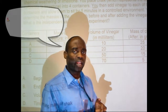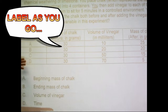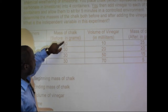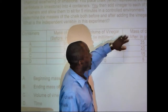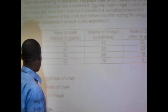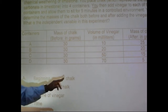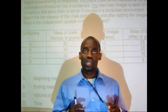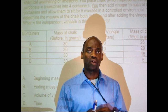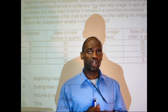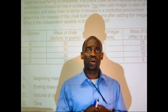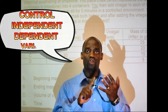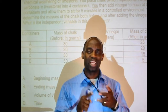Let's zoom in. We have containers A, B, C, D. We have a mass of chalk before in grams, volumes of vinegar, and mass of chalk after. The answer choices are: the beginning mass of the chalk, the ending mass of the chalk, the volume of vinegar, or time. We're going to break it down to help you understand what's going on. What is my C, my I, and my D? That is my control, my independent, and my dependent variable.